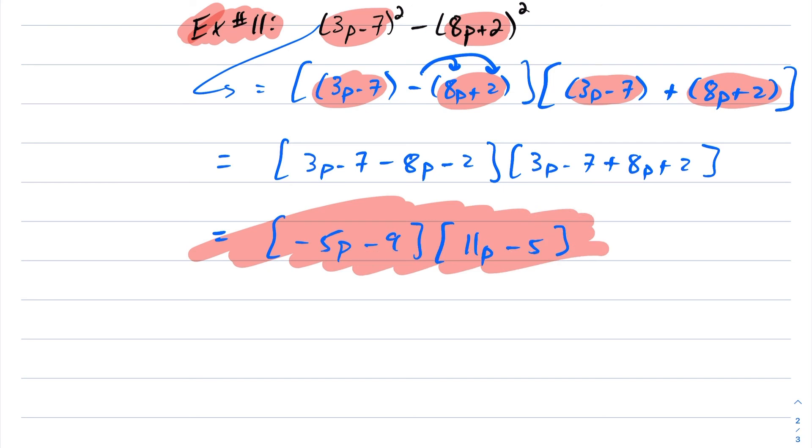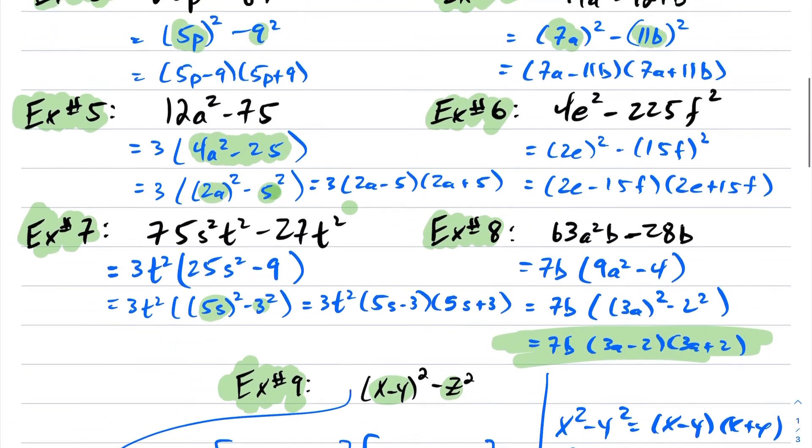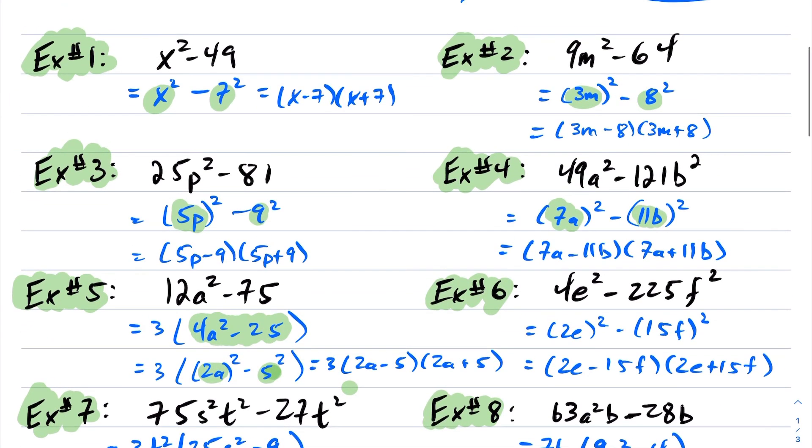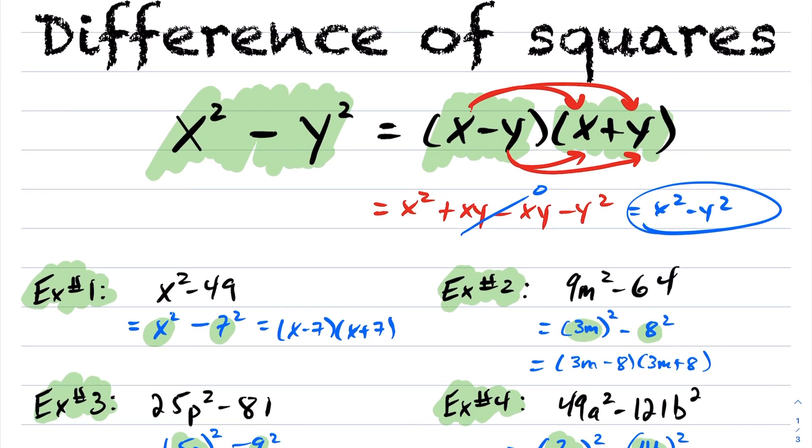Okay, this concludes factoring using difference of squares. Again, I encourage you guys, you can re-watch the video, pause the question, try it out yourself, and see if you get to these final answers. But I think by now you'd have a decent understanding of how you would go about applying your difference of squares formula. Okay, thank you.